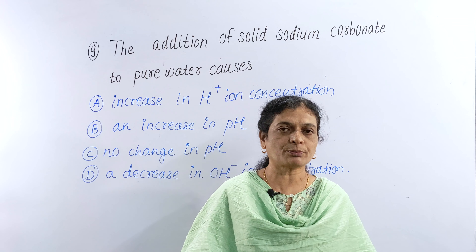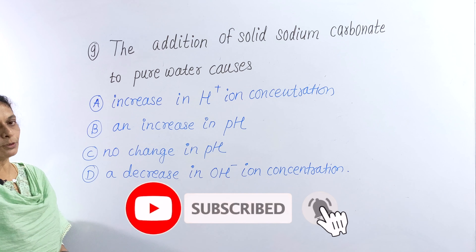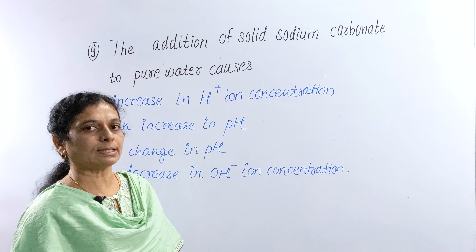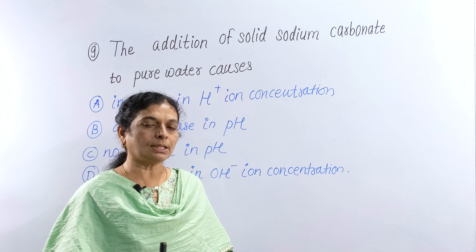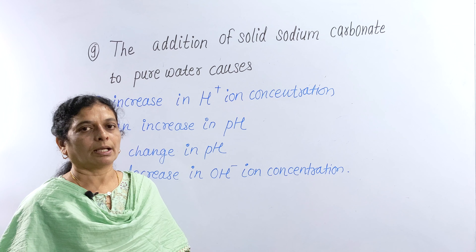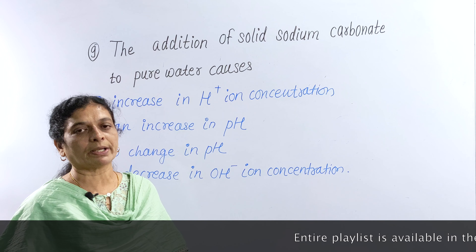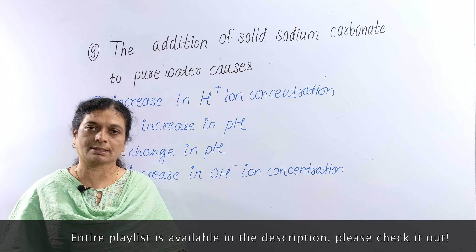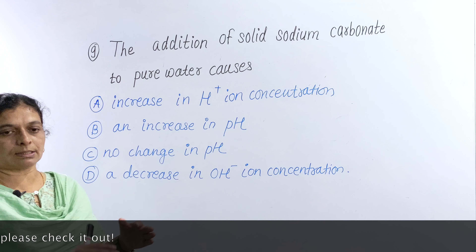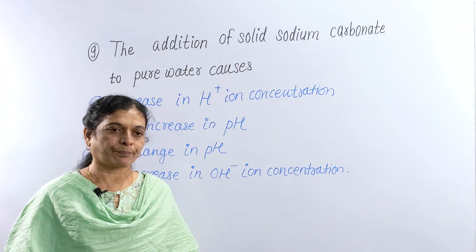There are four types of salts: salt of strong acid and strong base, salt of strong acid and weak base, salt of weak acid and strong base, and salt of weak acid and weak base. When these salts react with water, they produce acid and base. The nature of the aqueous solution depends on the type of salt, and this process is called hydrolysis. Hydrolysis is the reverse of neutralization.